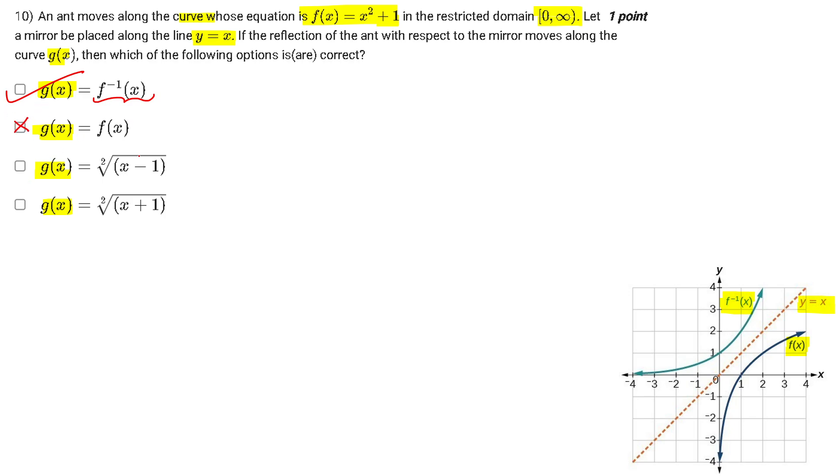Now the second option gets rejected. Options C and D can be cracked by another theory, and that is how to calculate the inverse.